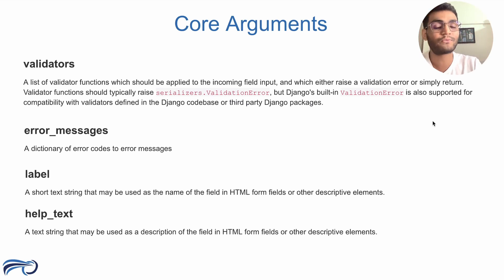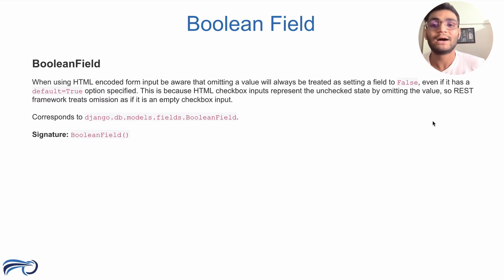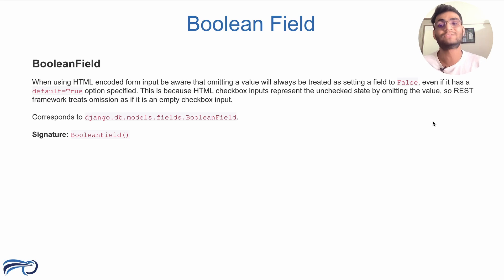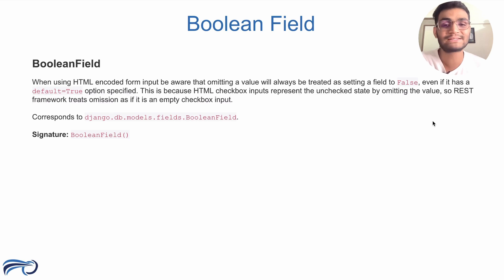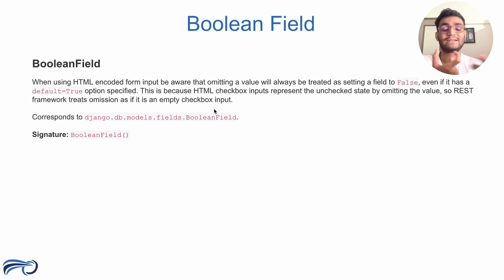Now we are going to understand the different kinds of fields. Let's start with the first one: BooleanField. As the name suggests, it is a Boolean field that will have two values — true and false. Whenever we want a field to have only two values, true or false, we use BooleanField. For example, if you want a field indicating whether a person is married or not, we use BooleanField. It corresponds to the Django DB model's BooleanField.